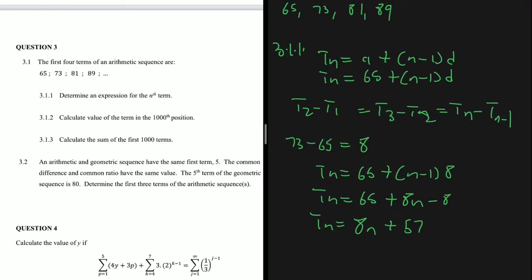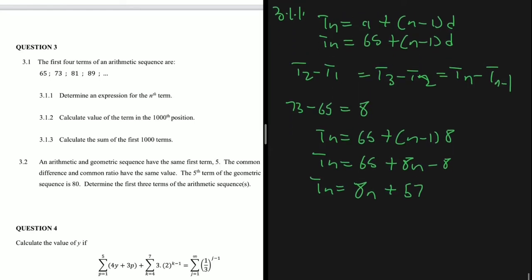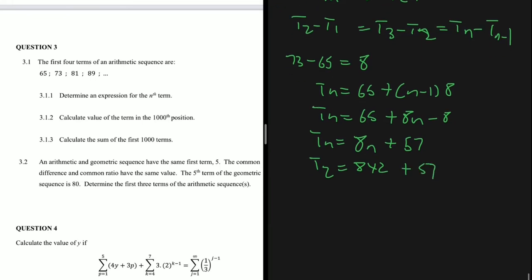After finding the expression, substitute a known term to verify. Let's check with n = 2: t2 = 8(2) + 57 = 16 + 57 = 73. That matches the given second term, so our formula is correct and we can move forward.